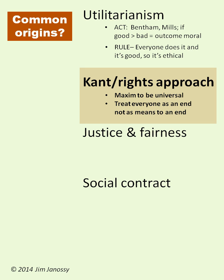Kant and the rights approach. We come up with rules called maxims that must be universal. If everybody applies the rule and the rule is not self-contradictory and it produces something of benefit, then the rule is ethical. But the second proviso is that it must treat everyone as an end — meaning it must look out for everyone's benefit. Everybody must benefit from this, not just somebody at the expense of another person.